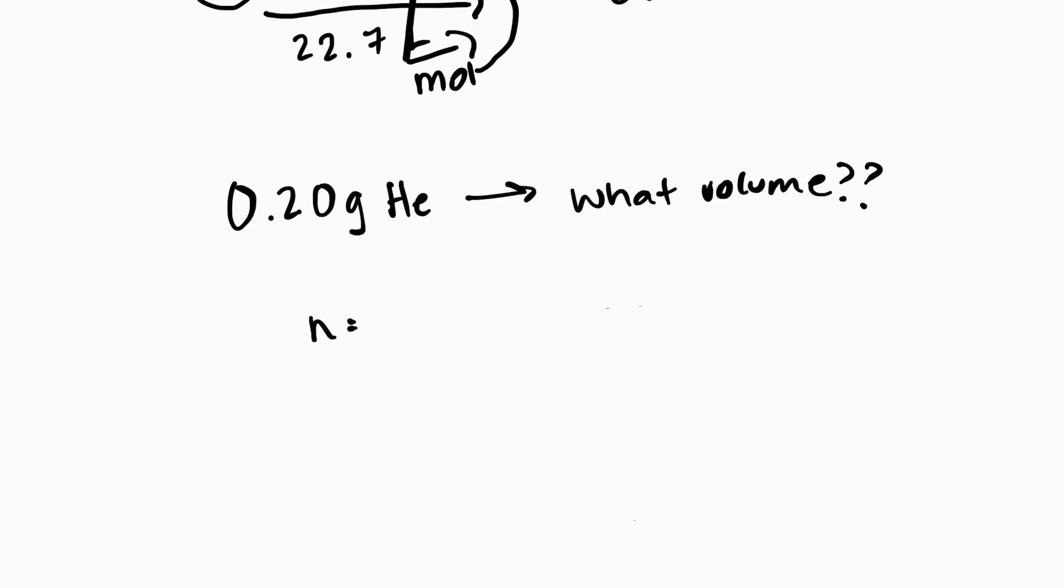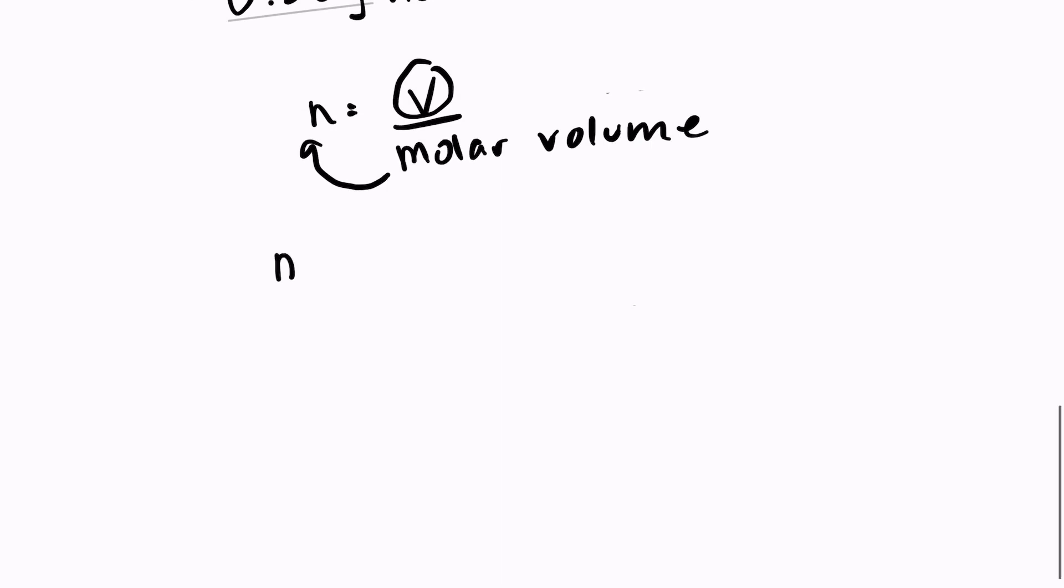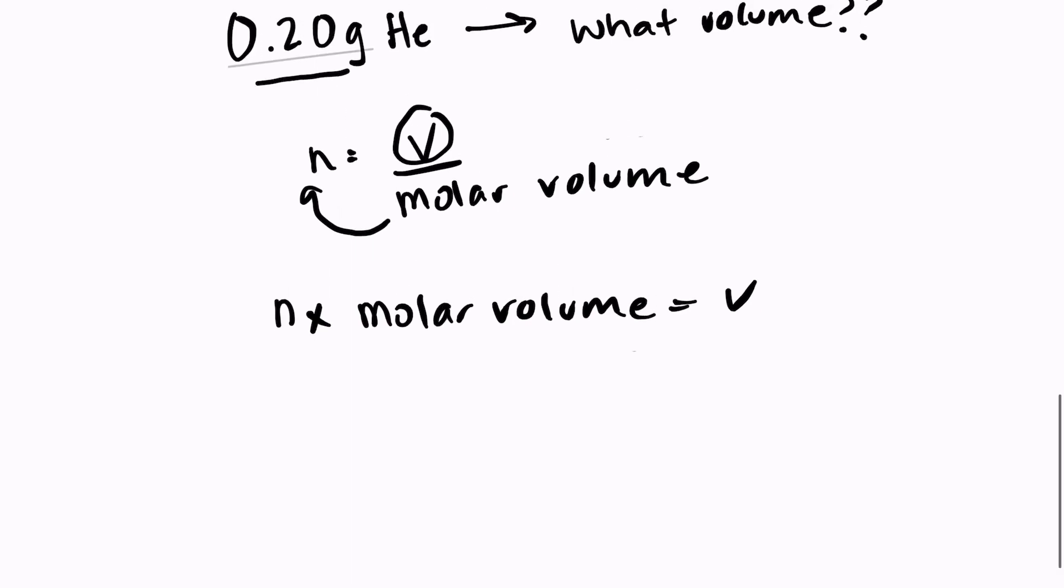I still have my formula N equals V over molar volume, but this time I'm solving for V. So I need to multiply my molar volume over to the other side to get V by itself. So N times molar volume is equal to V. I was not given N. I was actually given the amount of grams of helium. So my first step is to convert that into moles.